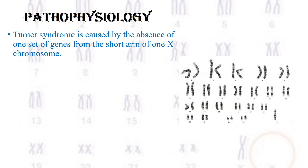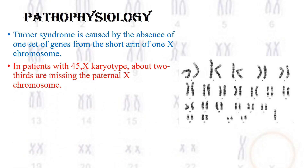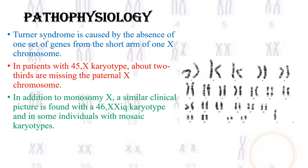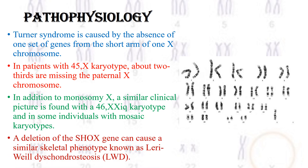Pathophysiology: Turner syndrome is caused by the absence of one set of genes from the short arm of one X chromosome. In patients with a 45,X karyotype, about two-thirds are missing the paternal X chromosome. In addition to monosomy X, a similar clinical picture is found with a 46,XXi(q) karyotype and in some individuals with mosaic karyotypes. A deletion of the SHOX gene can cause a similar skeletal phenotype known as Leri-Weill dyschondrosteosis, LWD.